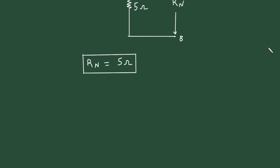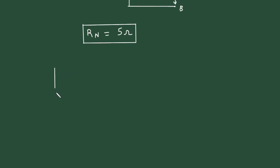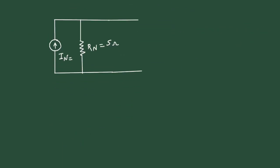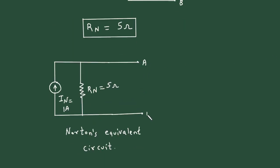Now we have the value of Norton's resistance and Norton's current, so we can draw the Norton equivalent circuit. For the Norton equivalent circuit, there will be a current source in parallel with Norton's resistance. IN is equal to 1 ampere and Rn is equal to 5 ohm. This is Norton's equivalent circuit, with terminal A and terminal B.